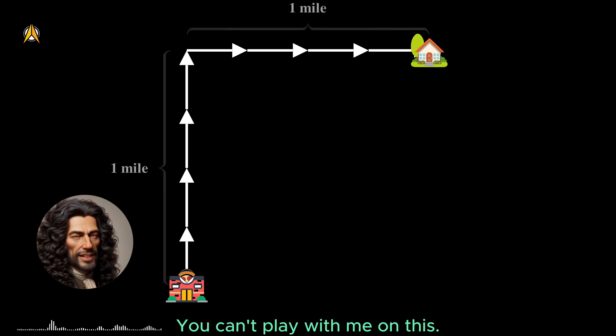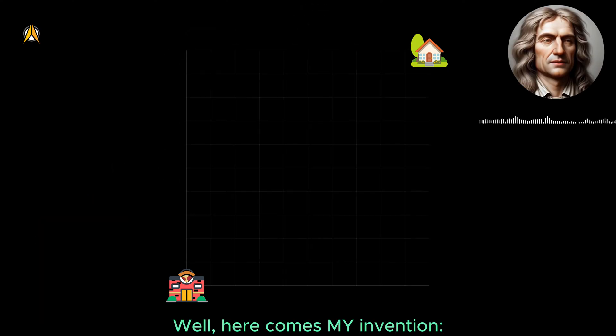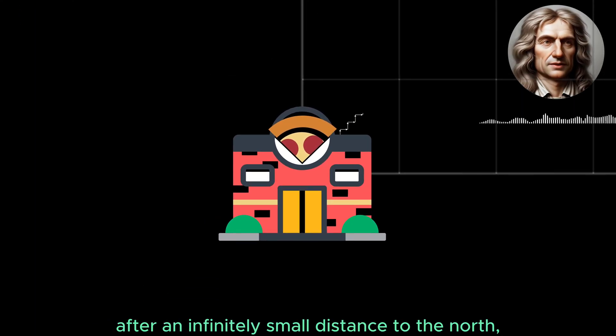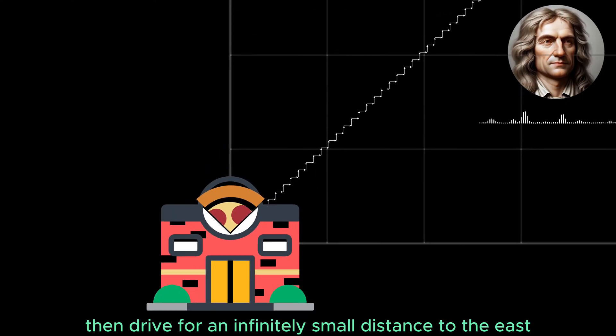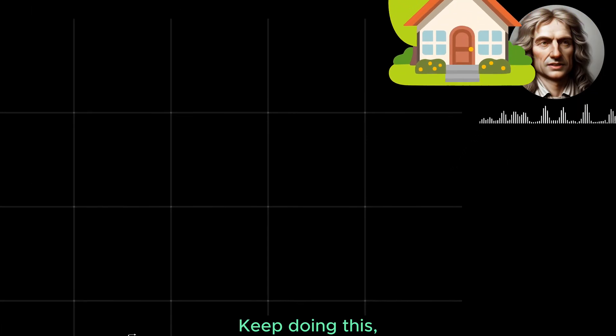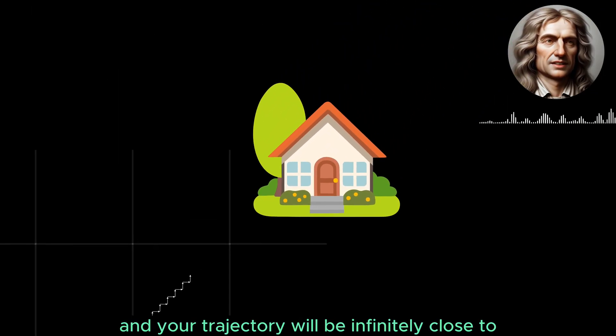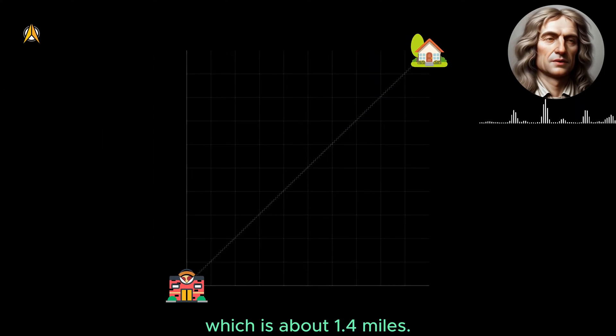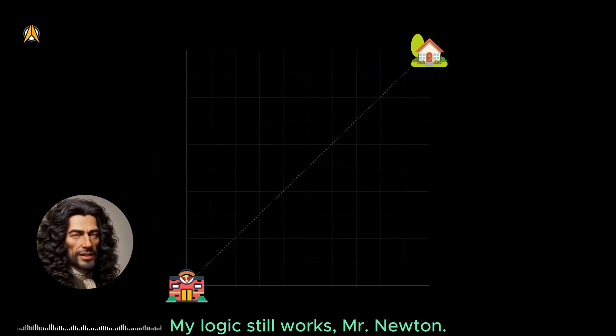Well, here comes my invention. I want you to make a right turn after an infinitely small distance to the north, then drive for an infinitely small distance to the east, before turning north again. Keep doing this, and your trajectory will be infinitely close to the diagonal line from the shop to my place, which is about 1.4 miles. My logic still works.